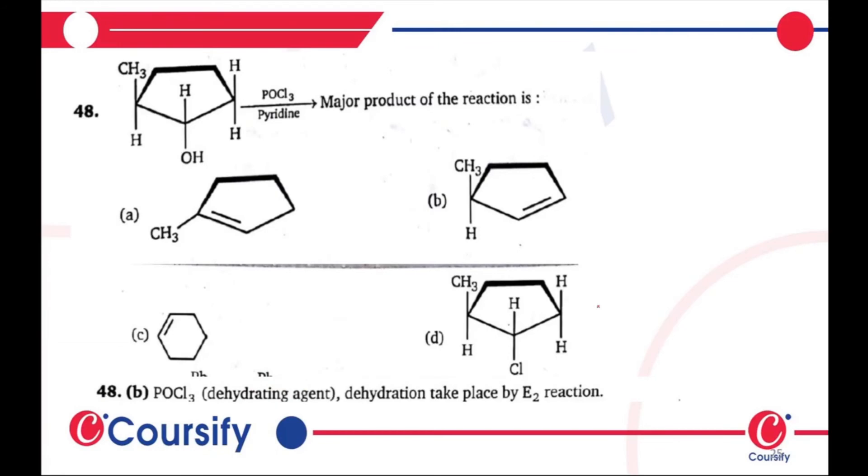POCl3 is a dehydrating agent. With OH and H, what will happen? Dehydration - E2 elimination takes place. The answer is B.